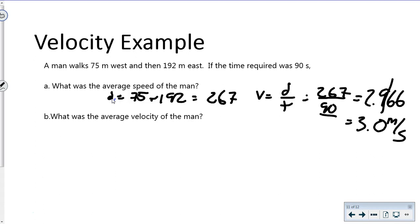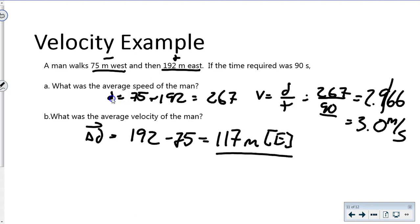For average velocity, we need displacement. We have 192 meters east (positive) and 75 meters west (negative). Adding them: 192 minus 75 gives us 117 meters to the positive, which means east. The time stays the same, so we divide by 90 seconds to get 1.3 meters per second east.